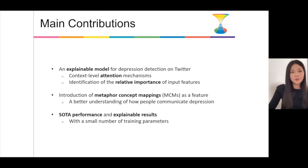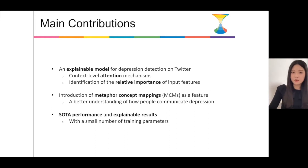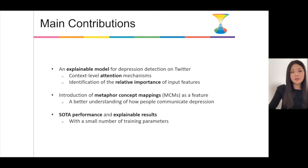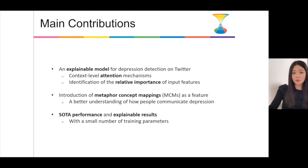The main contributions of our work can be summarized in threefold. First, we propose an explainable model for depression detection on Twitter. We incorporate context-level attention mechanisms into our model so we can identify the relative importance of input features. Second, we introduce a novel feature called metaphor concept mappings into our model to better understand how people communicate their depression on social media.